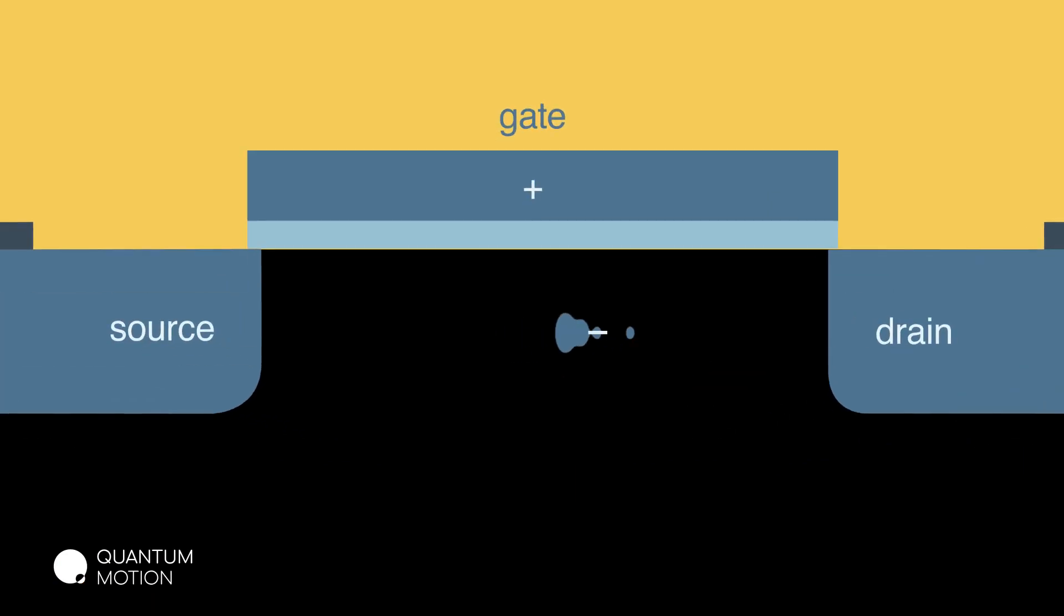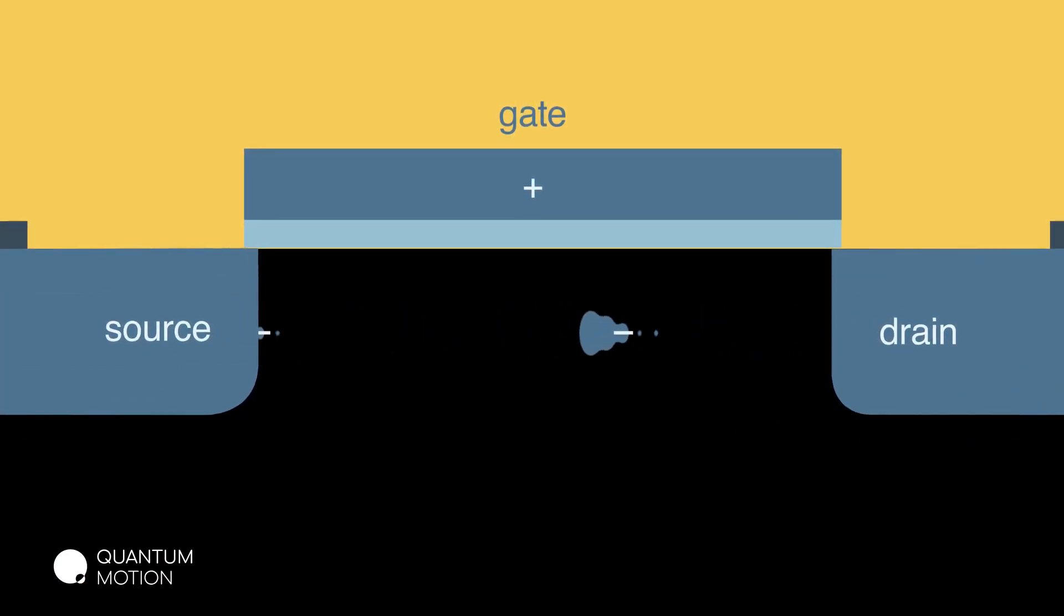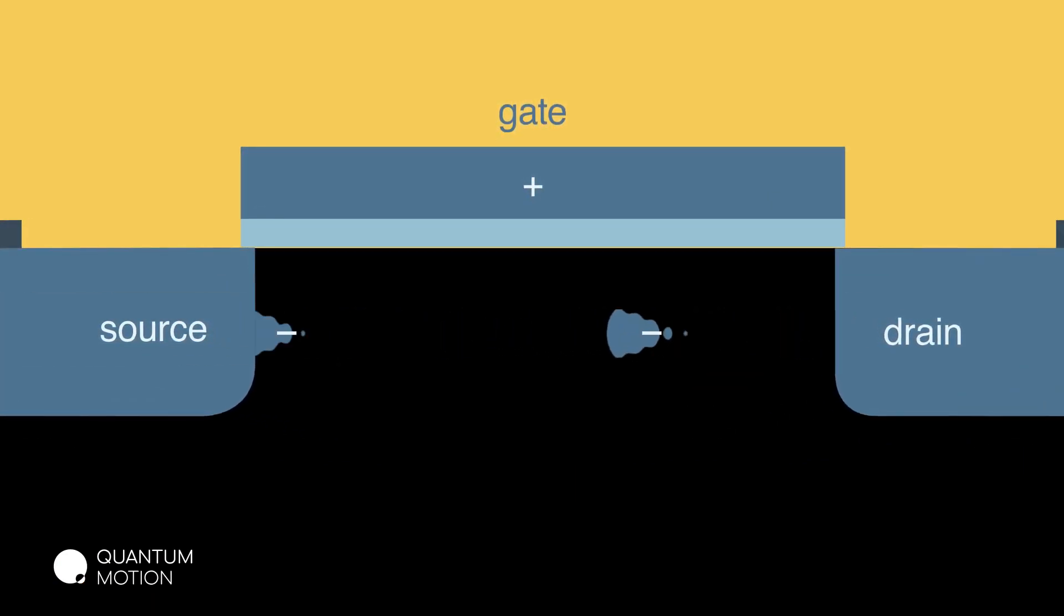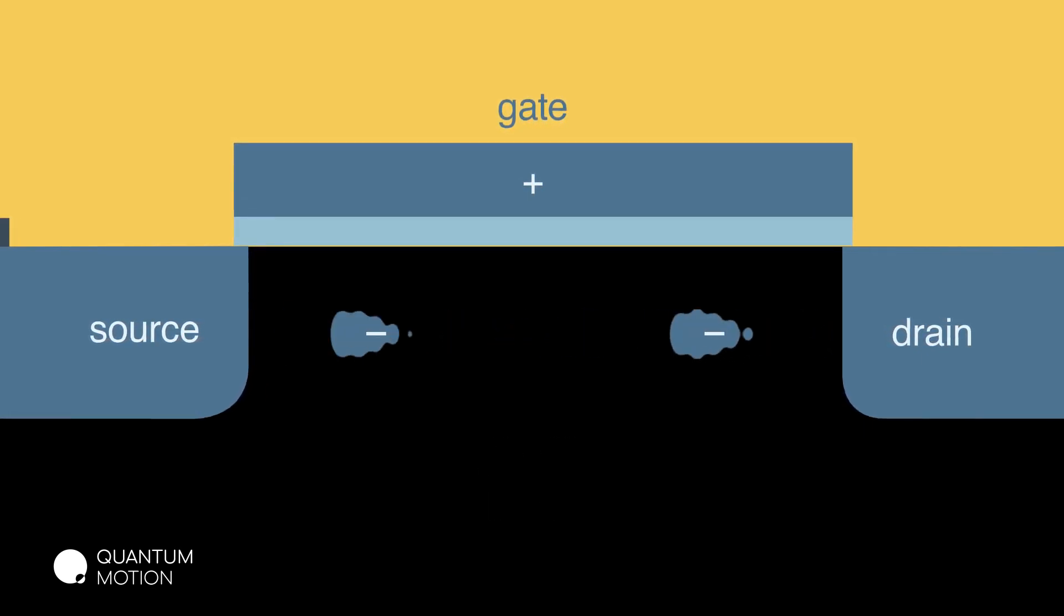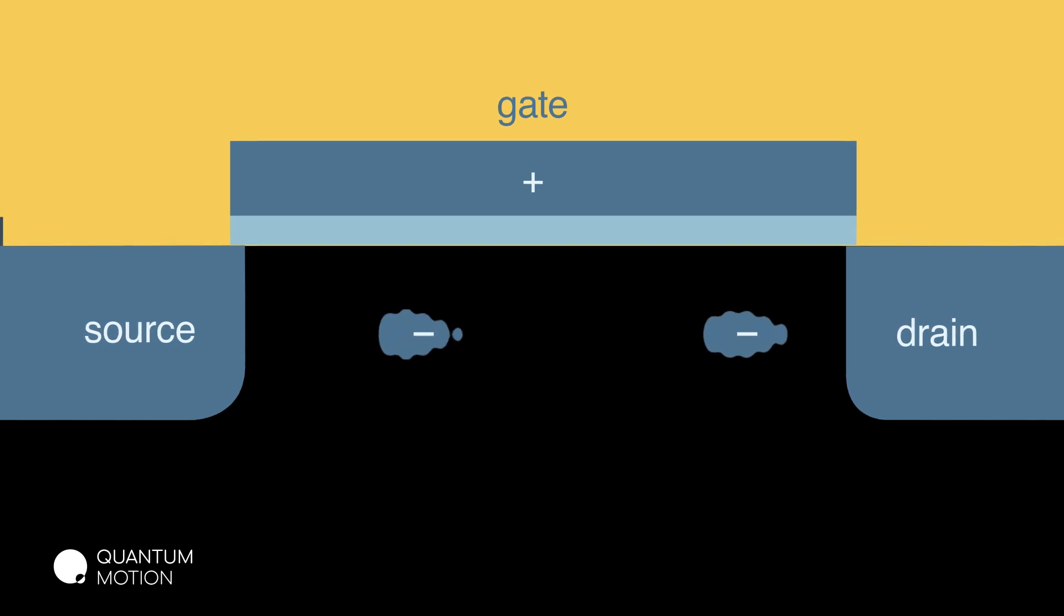Cooling down silicon chips helps them get in touch with their quantum side, and allows them to work as quantum computers. At these temperatures, individual electrons can be loaded, one by one, into silicon transistors, and used to store quantum information.